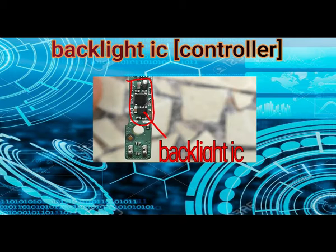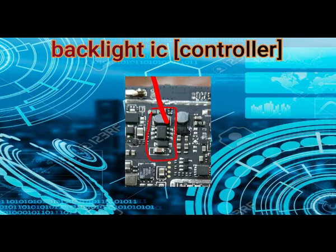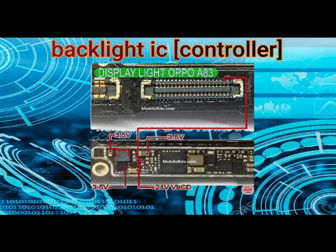The Backlight IC section is made of components that boost the voltage to be able to light up your LCD display for easy viewing. This is why you get 20 to 30 volts in the backlight section instead of the 3.7 or 4.2 volts that supply the phone from the battery.